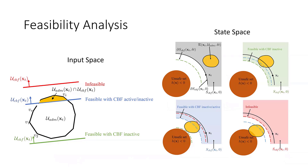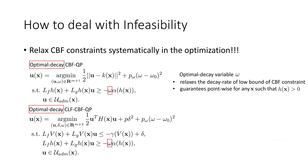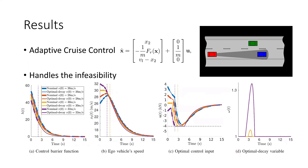To solve the potential infeasibility, we introduce a new variable omega on the CBF constraint, which relaxes the decay rate. We denote our approach as the optimal decay method, since the optimal decay variable omega is optimized simultaneously. For any state x where h(x) > 0, omega can relax the decay rate, guaranteeing point-wise feasibility. We validate our approach on an adaptive cruise control example: by testing different initial conditions, our method handles infeasibility where the nominal controller fails due to saturated input bounds. Thank you for your attention.